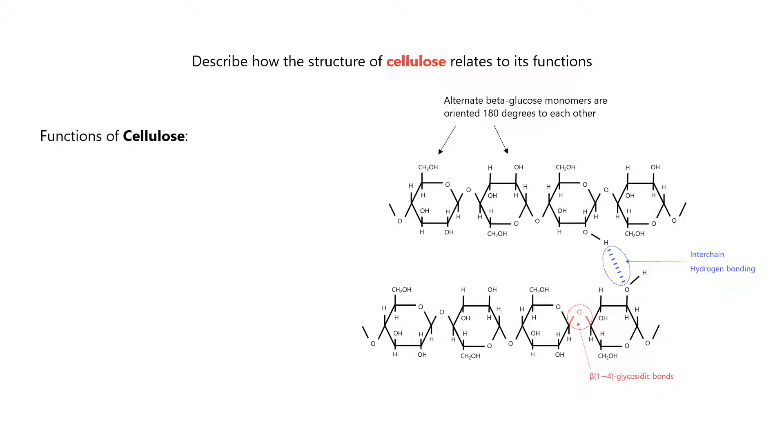Next, let's look at some of the properties and functions of cellulose. Firstly, cellulose has high tensile strength due to the cross-linking between parallel chains. This gives cellulose stability as a structural material.